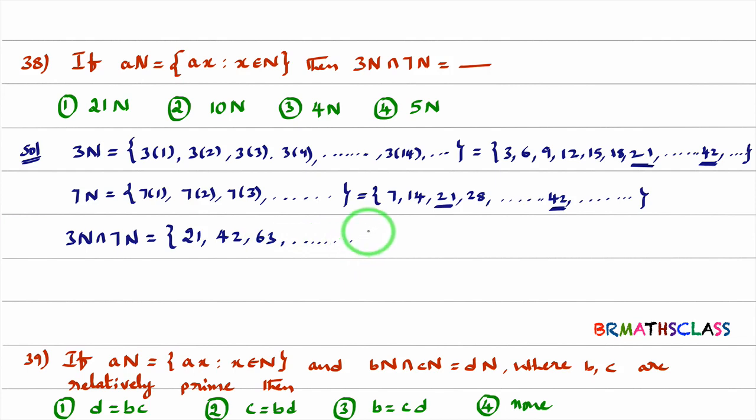So what you are getting? You are getting multiples of 21. Try to understand. This can be written as 21 into 1, 21 into 2, 21 into 3. All multiples of 21 you are getting. So what is this? It is of the form 21x. So this set is nothing but 21N. So what is the right option here? First option is the right option.